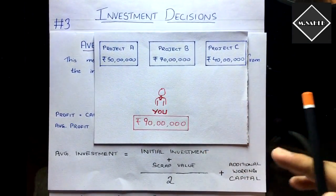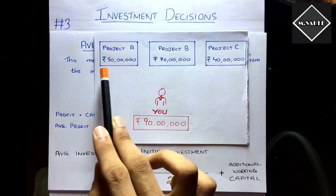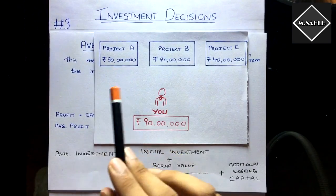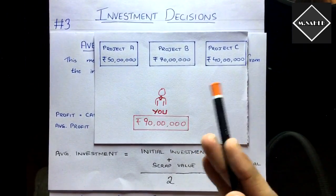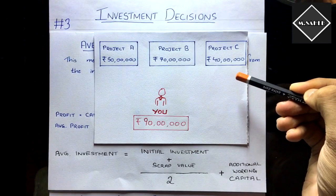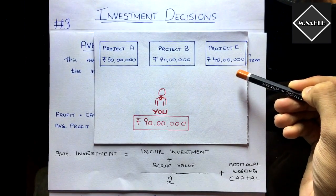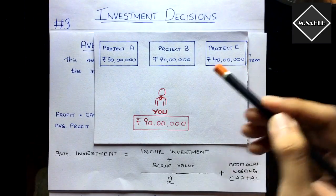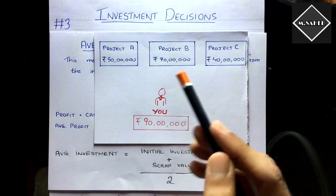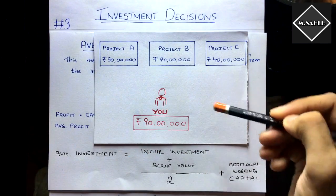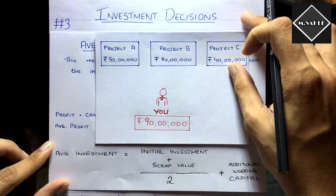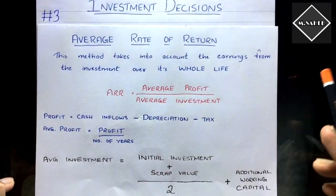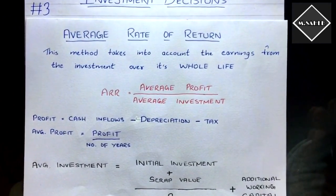Suppose a company is considering three investments. The initial investment of Project A would be 50 lakh. If the company invests 50 lakh, the cash inflows it will receive in the future are not profits. Profits are what remain after deducting depreciation and tax. So those accounting profits — after deducting depreciation and tax — are taken into account in Average Rate of Return.